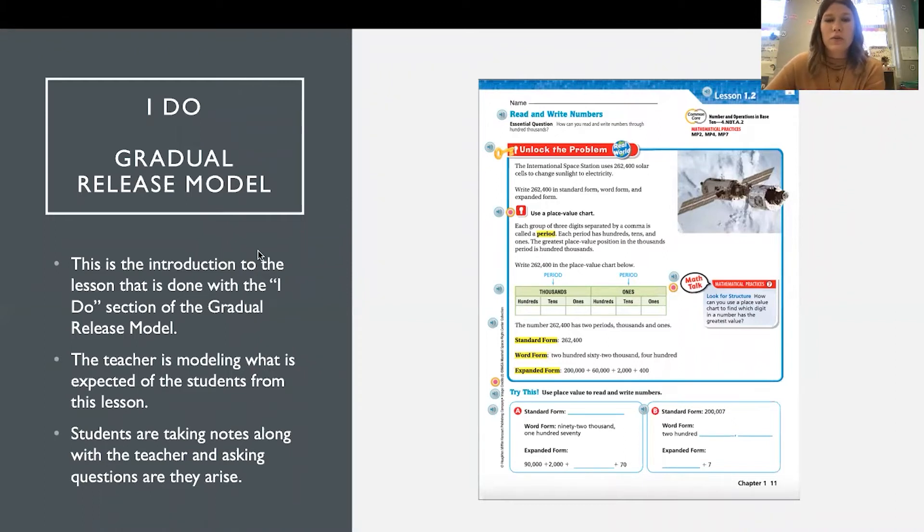So the I do portion of the gradual release, it could look like this as an example. So this is a screenshot of our book that we use. This is the GoMath series in math. So this page would be what I would do for my students at the beginning of a lesson. We would talk about vocabulary, we would dissect the essential question, talk about the verbs and what the words mean in that target. We would go over the vocab, make sure the students understand the difference in these three things and make sure they understand what the word period means in this sense. So the I do portion, again, is just the teacher modeling what is expected from the students for this lesson.